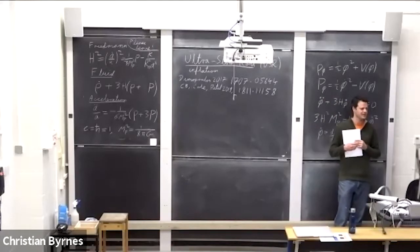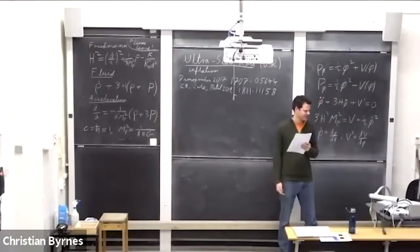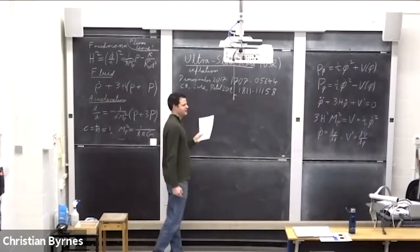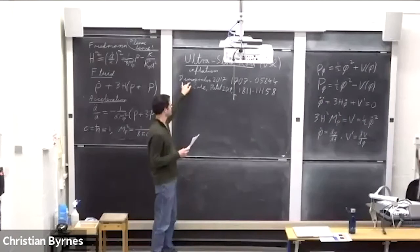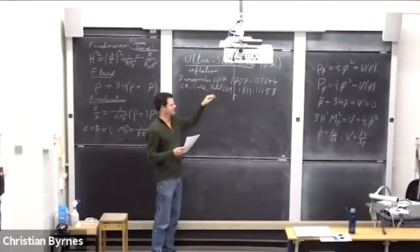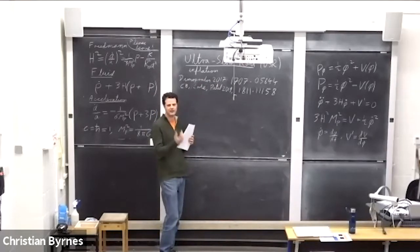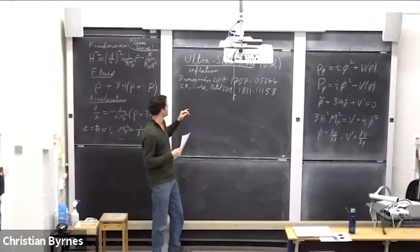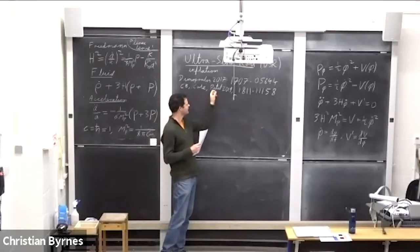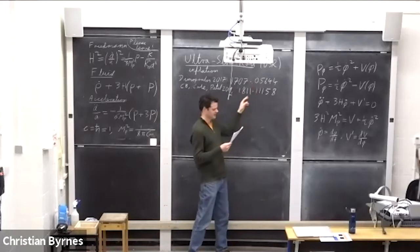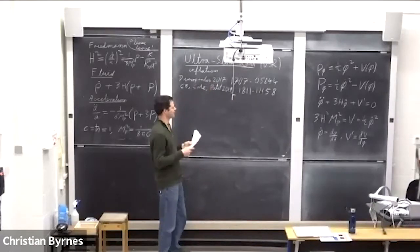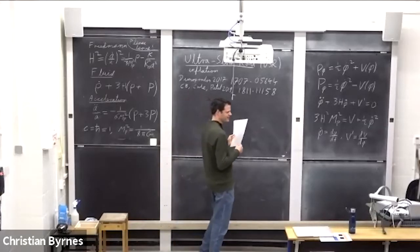I'm assuming that essentially nobody is familiar with this topic. As always, please ask questions using sound. Since this is not a topic in textbooks, I've given two references: one by Costas Dimopolous from 2017 called 'Ultra Slow Roll Inflation Demystified', about the background evolution — the inflaton field at the homogeneous and isotropic level. The second paper is by myself and Pippa Cole, more recent, specifically about the link to primordial black holes. Today we'll focus on backgrounds.